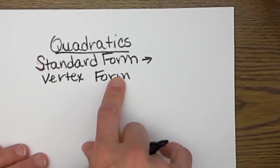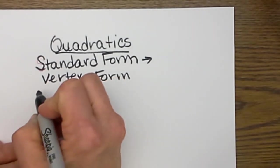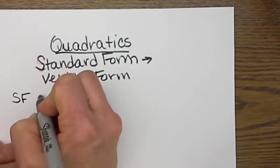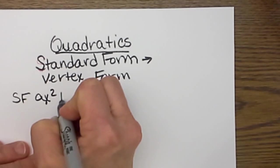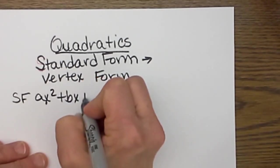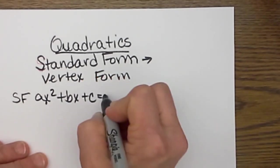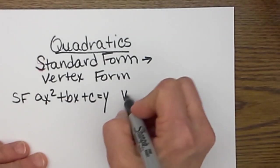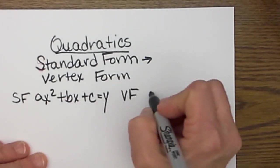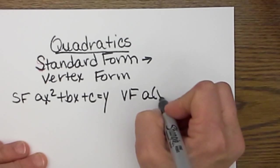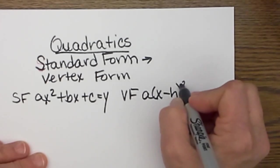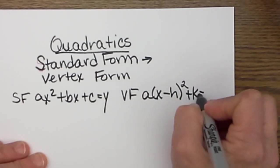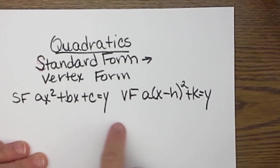Let's overview very quickly what standard form is. Standard form is ax² + bx + c = f(x) or y. Vertex form is a(x - h)² + k = y or f(x). So those are the two forms of the quadratic.